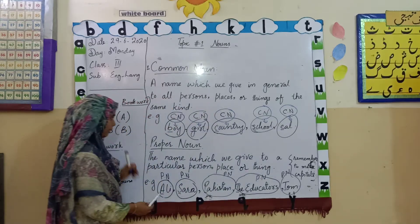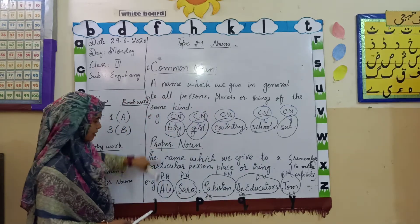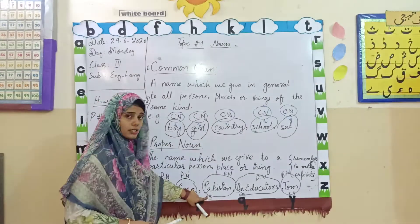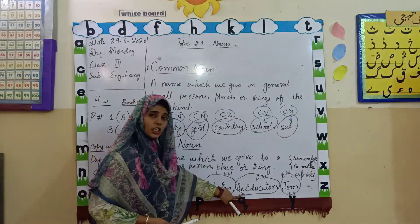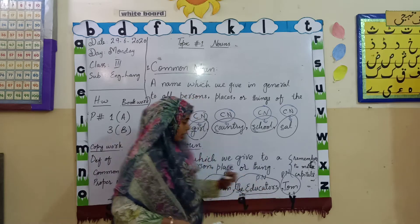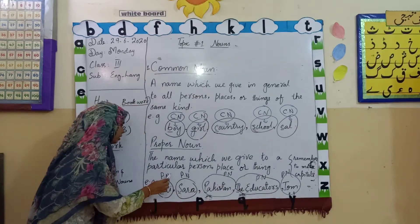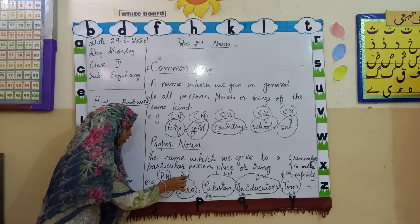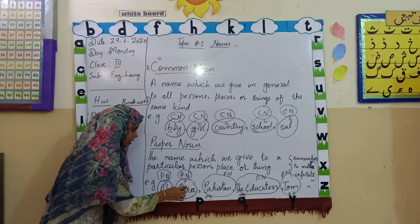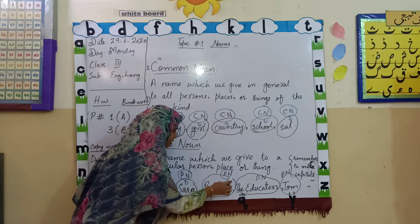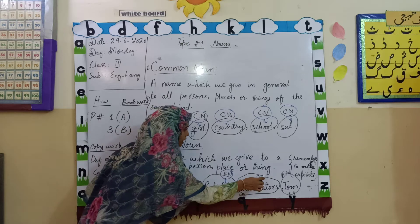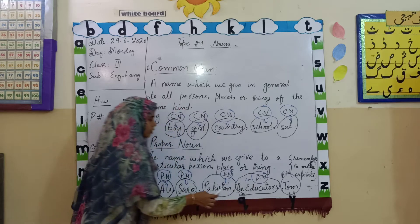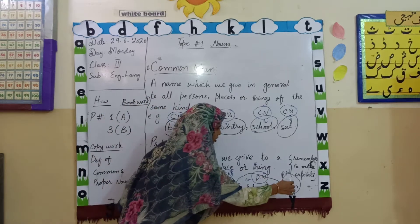The proper name of a boy is Ali; girl is Sara; country is Pakistan; school is The Educators; cat is Tom. I have written PN here — it shows proper noun. Pakistan is a proper noun. The Educators is your school and it is a very proper name of your school.